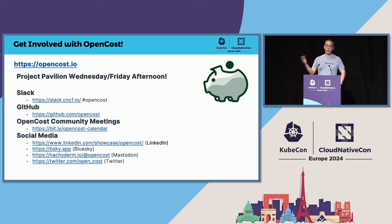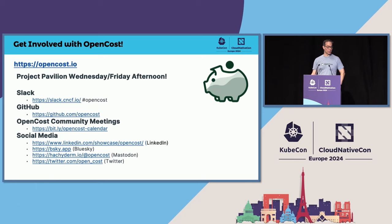We are in the project pavilion Wednesday and Friday afternoons this week — be sure to stop by. I'll have some stickers, maybe some t-shirts. We are in the CNCF Slack, we're on GitHub with five repositories, and we have fortnightly community meetings that are documented — we record them and dump them to YouTube. And then we're on all the social media. Thank you very much, talk to you soon.